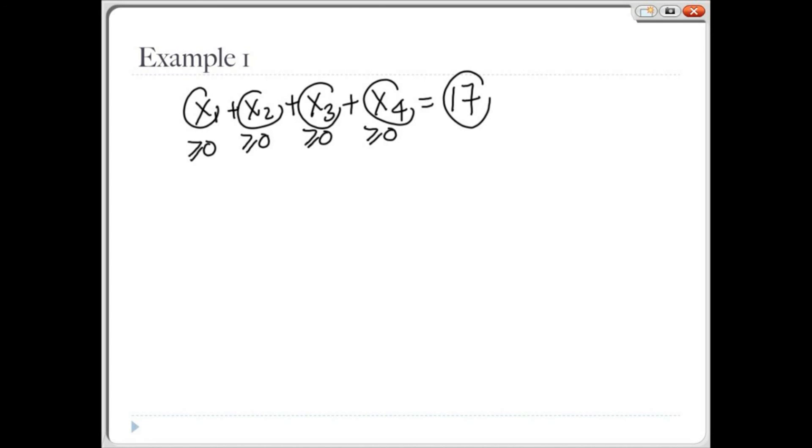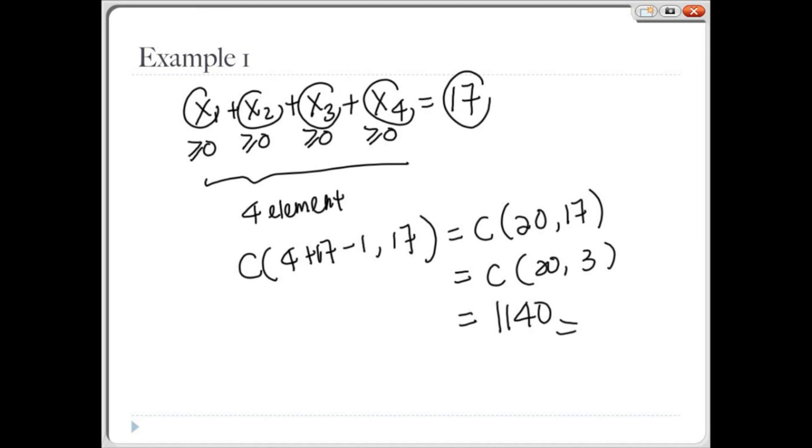From the theorem we just showed, we can see that there are C(4 plus 17 minus 1, 17) options, which is C(20, 17), which is also equal to C(20, 3), which equals 1,140.